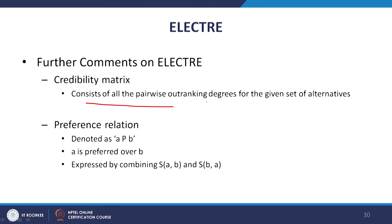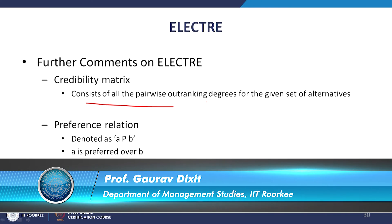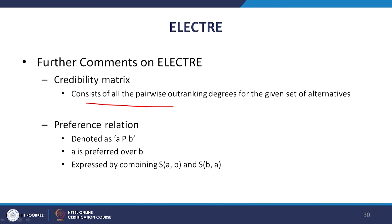The credibility matrix contains both S(A,B) and S(B,A). Since this is a non-symmetric relation, S(A,B) ≠ S(B,A). To determine the final preference relation A P B (A is preferred over B), we need to combine S(A,B) and S(B,A). How this is done will be discussed in the next lecture. We stop here for now — thank you.